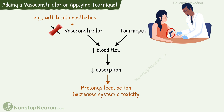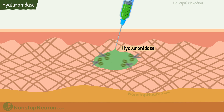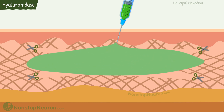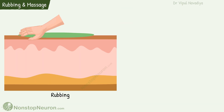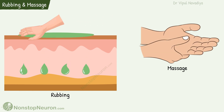Now the next factor: adding hyaluronidase to the injection. Hyaluronidase is an enzyme that breaks down the matrix. This promotes the spread of the drug, which in turn increases absorption. Next, rubbing increases absorption from the skin. And finally, massage — it increases blood flow and therefore increases absorption.